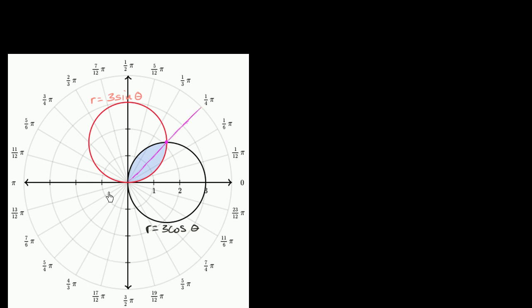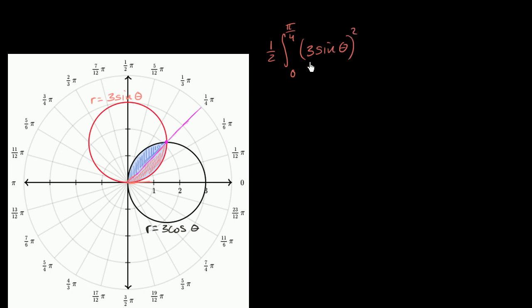The key is to realize that for theta between zero and pi over four, we're bounded by the red circle — R is equal to three sine theta. So this first area is going to be one half times the definite integral from zero to pi over four of three sine theta squared, d theta. That's the orange region.